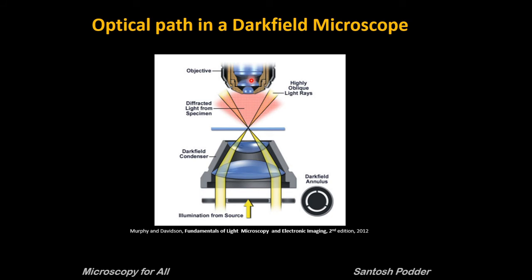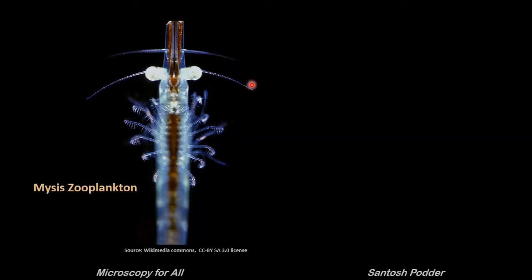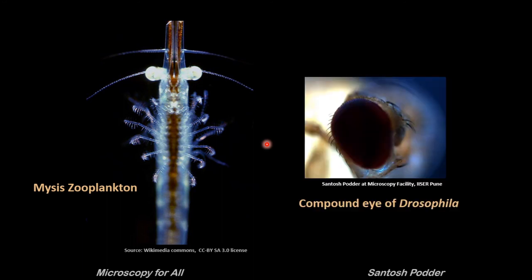Since non-diffracted background light is absent from the image, light-diffracting objects look bright against a dark field. Dark field microscopy is a very simple and effective technique, well suited for live and unstained samples such as waterborne minute organisms like zooplankton, bacteria, bacterial flagella, microtubules, actin, and so on. Here the compound eye of Drosophila is shown as an example of how specimens appear in a dark field microscope.